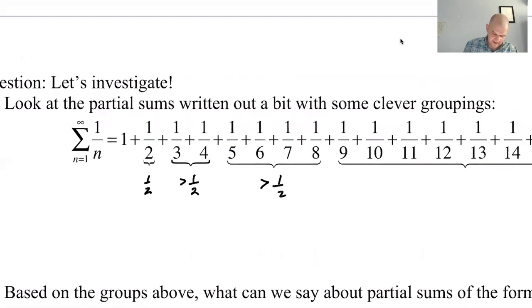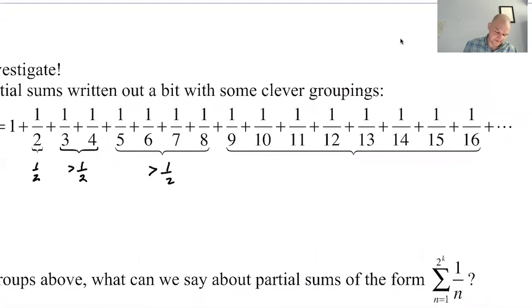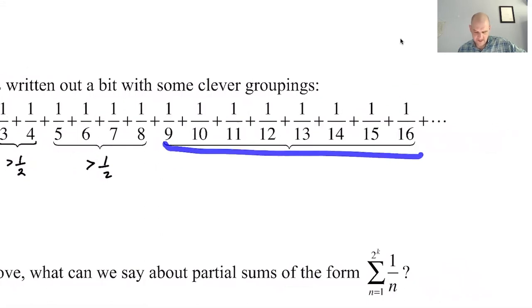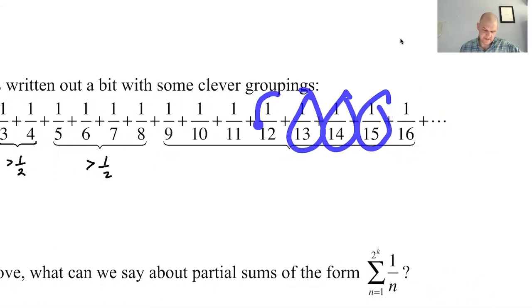So if you keep working, what's happening here basically is I'm grouping them in powers of two. So I took two to the zero terms, two to the first terms, two to the second terms. This will be two to the third term, so there's eight terms here. And this will be bigger than 1 sixteenth plus 1 sixteenth, 1 sixteenth, 1 sixteenth, et cetera. So this is going to be bigger than 1 half also. It's bigger than eight times 1 sixteenth. And so that's going to keep happening forever.